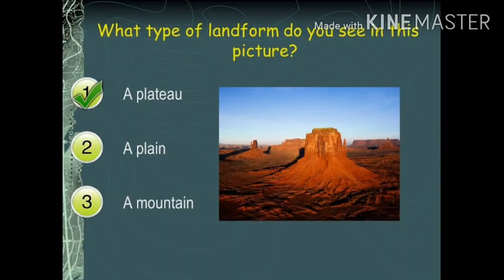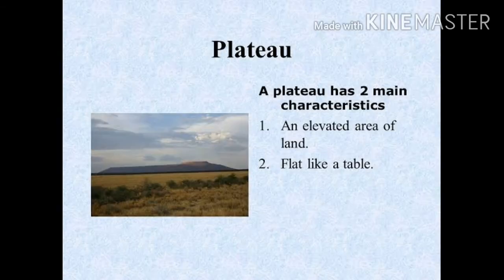Next, in this picture, which land form do we see? It's a plateau. A plateau is an elevated upland with a flat top. This plateau is also called a table land, and it is useful as a grazing ground for animals.